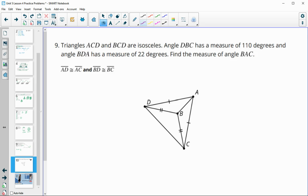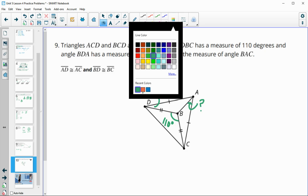Number nine says the triangles ACD and BCD are isosceles. And we see those marked on this picture. Then it says angle DBC. So this angle here is 110 degrees. And angle BDA, so BDA, this angle here, has a measure of 22 degrees. Find the measure of angle BAC. So ultimately, we want to know this angle here.